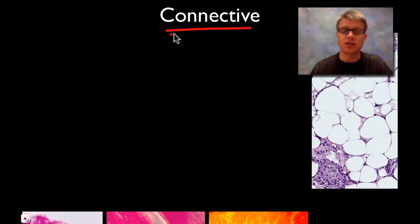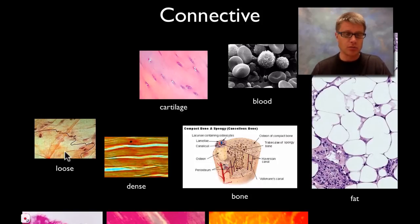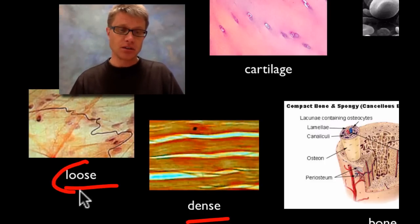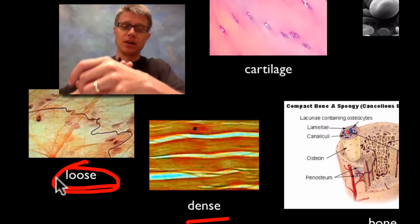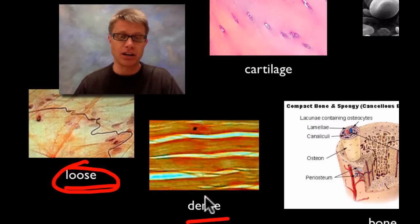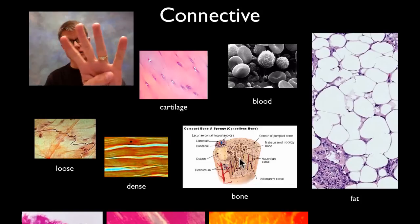So we've got epithelial for covering, muscle for movement, and nervous — the last type is connective tissue, which is kind of a catch-all for everything else. Connective tissue has living cells but also a nonliving matrix around them. Examples include loose connective tissue — the collagen and elastin fibers under your skin that hold it in place and let it bounce back — and dense connective tissue like tendons, which have much more collagen. Other types of connective tissue include cartilage, blood, bone, and fat. All of these connect the other tissue types.